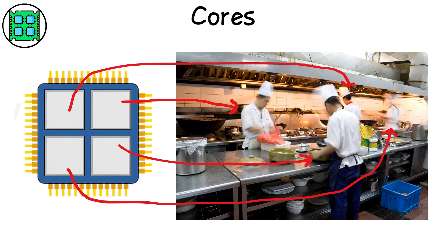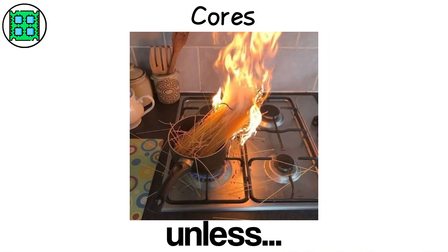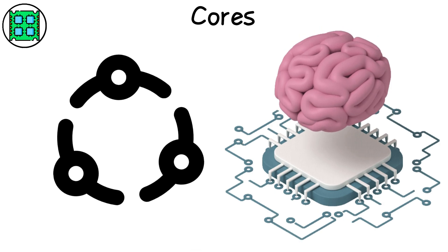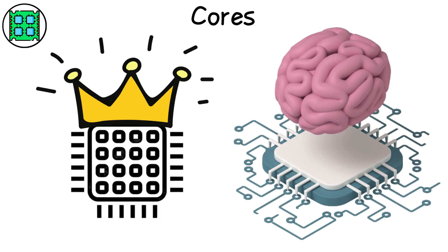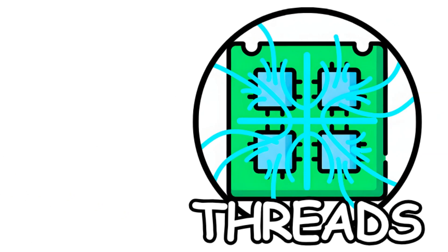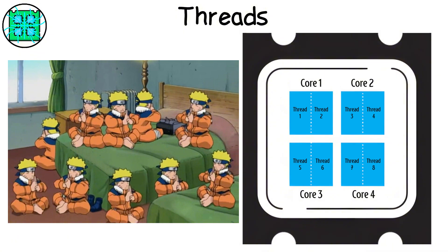If your CPU were a kitchen, each core would be a separate chef. More chefs mean faster dinner — unless they all try to use the same stove. That's where smart coordination comes in, and that's why multi-core CPUs rule.